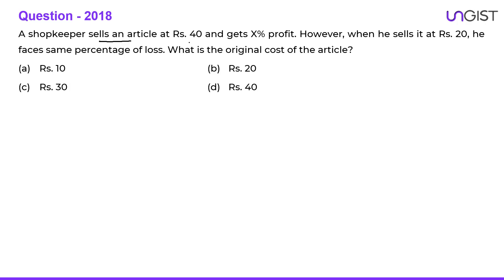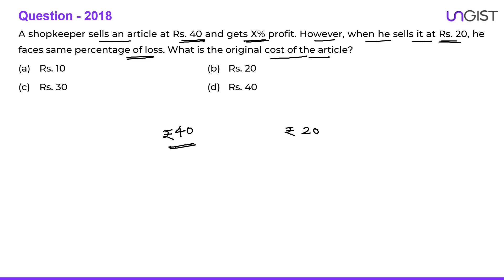The next question says: a shopkeeper sells an article for Rs.40 and gets X percent profit. However when he sells it at Rs.20 he faces the same percentage of loss. What is the original cost price of the article? When selling at Rs.40 there is a gain, and when selling at Rs.20 there is a loss. So the CP will lie somewhere between 20 and 40. Looking at the options — 10, 20, 40, 30 — the answer is Rs.30.